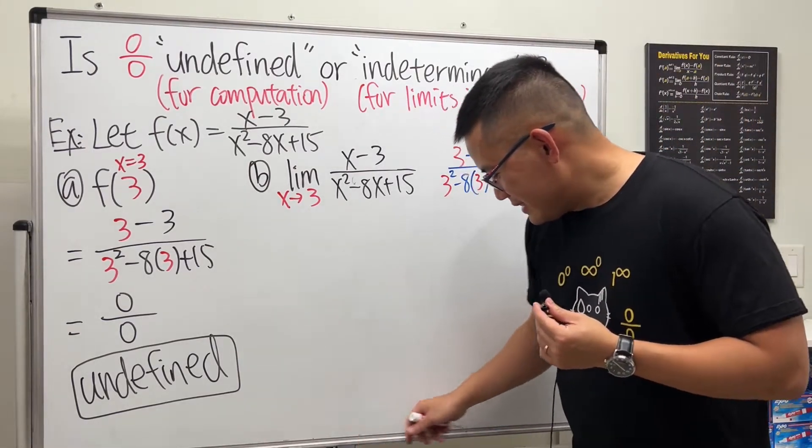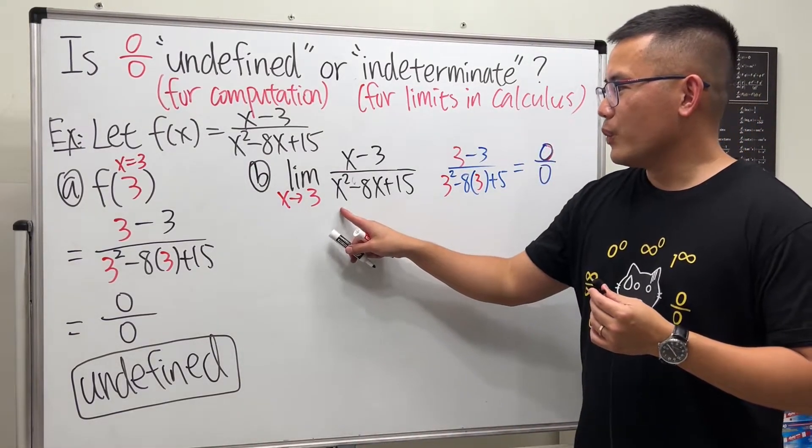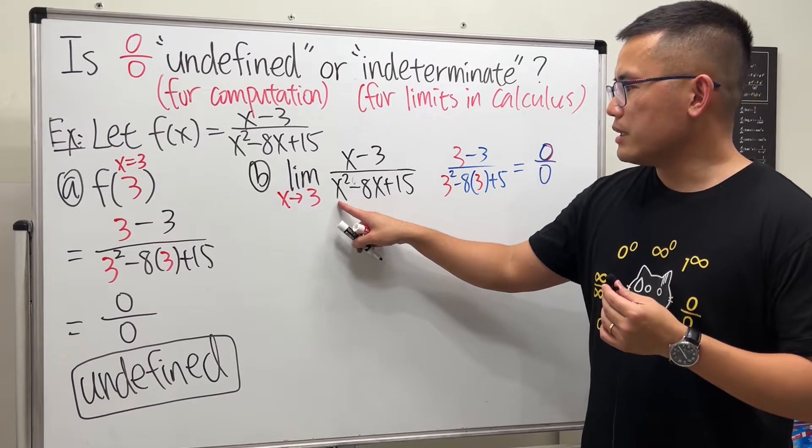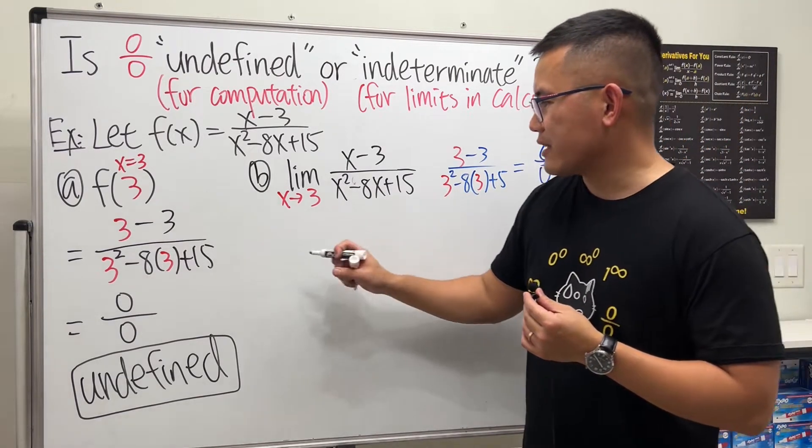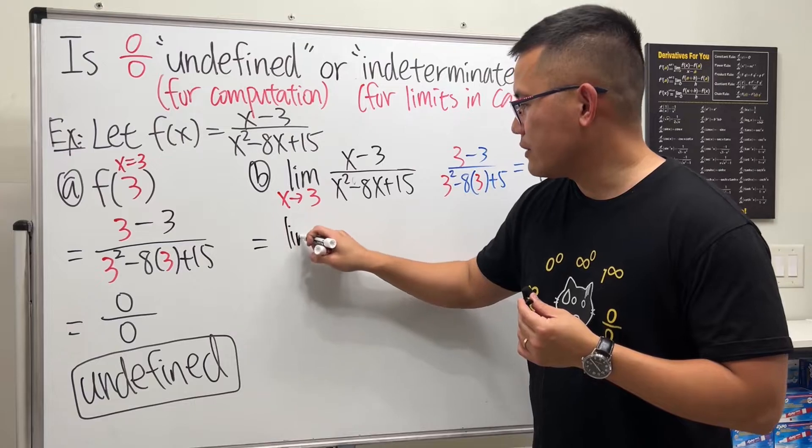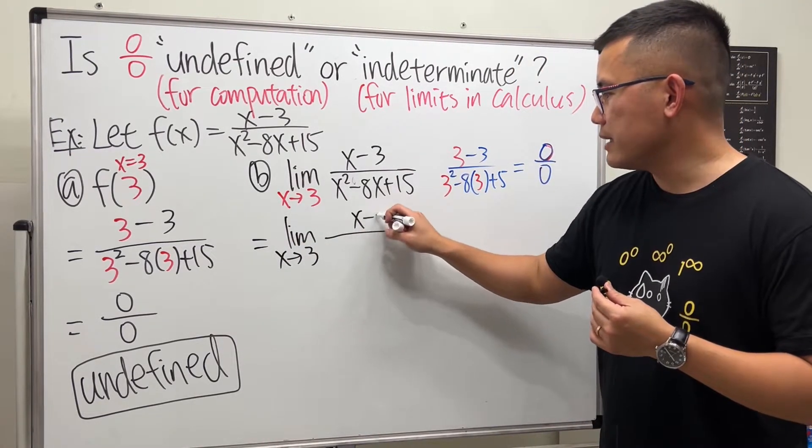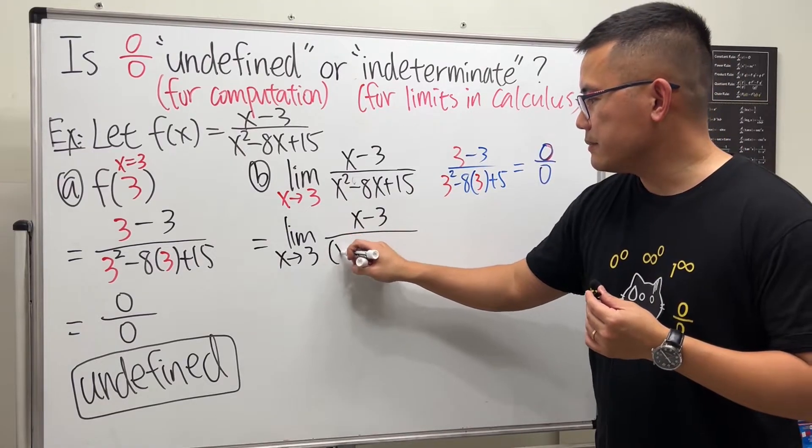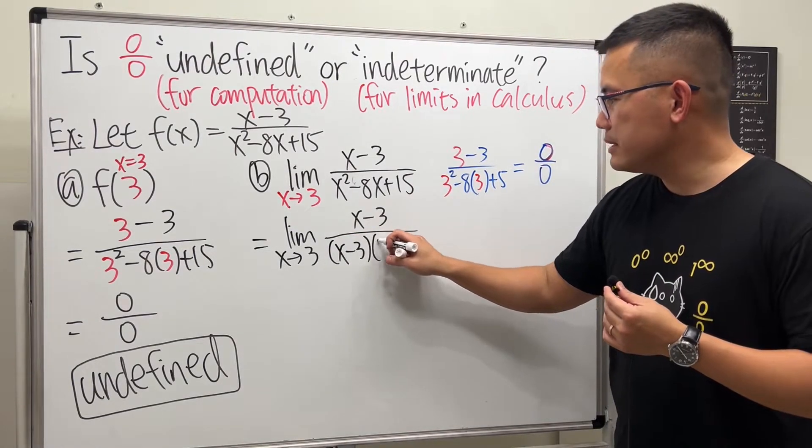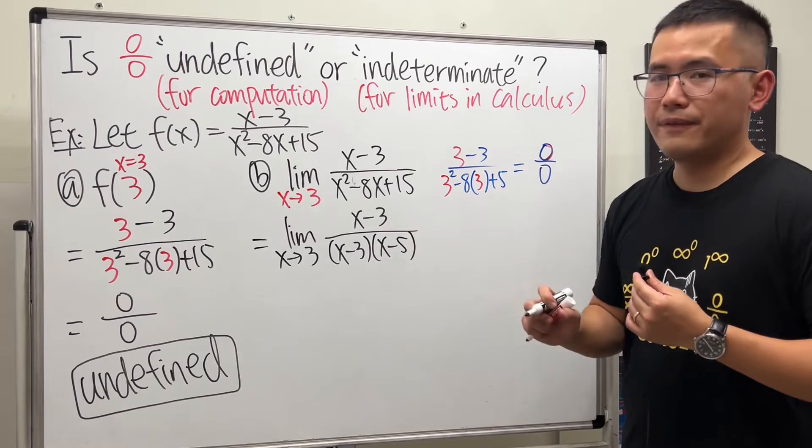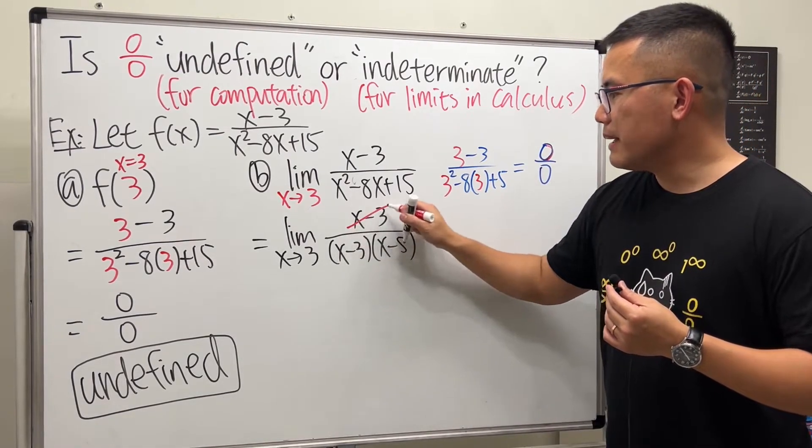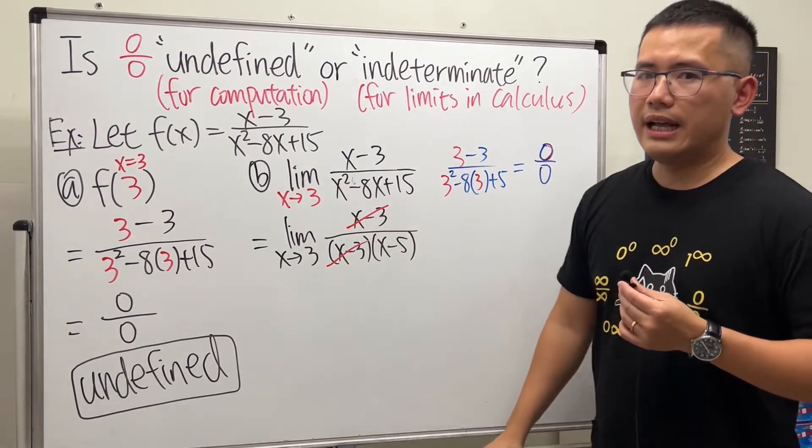Anyway, so let's see how we can figure out the answer. Well, notice that on the bottom we have a quadratic, we can factor it actually. So let's say we have the limit as x approaching 3. On the top we have x minus 3, on the bottom, factor it, we get x minus 3 times x minus 5. Look, x minus 3 cancels out with that x minus 3.